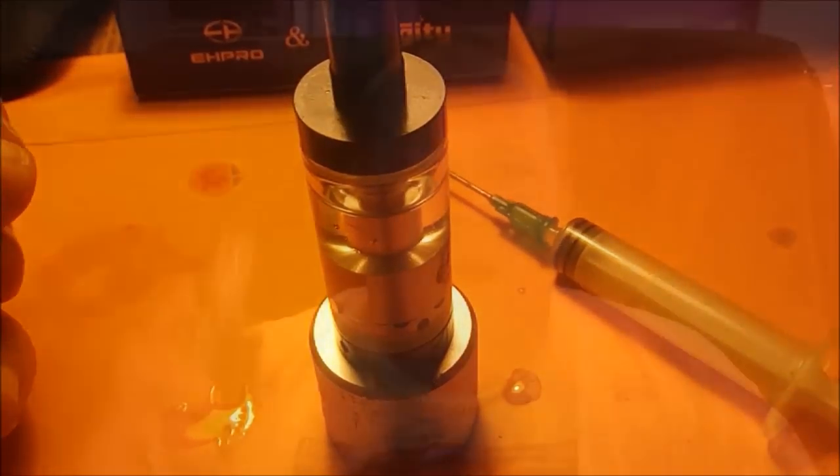Alright, well let me go ahead and put this on device and we'll see how she makes. Let's go over the cons on the device. One of the biggest cons I've got is the leaking. It does like to leak when you build it, after you first put the juice in and after you build it. The juice is going to come out those air holes, it's just the nature of this beast, it's going to leak sometimes.